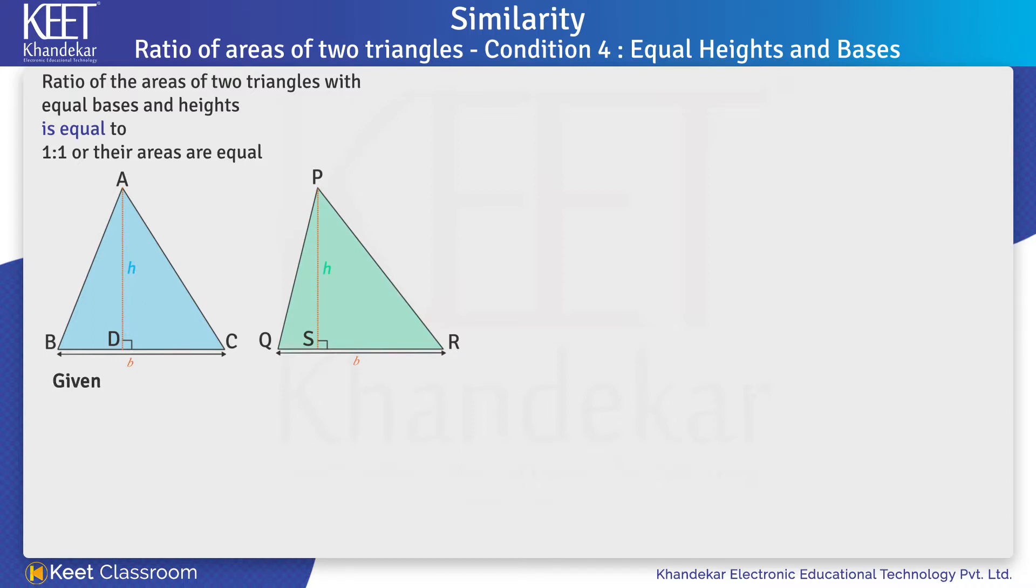Therefore, in the given, we write: In triangle ABC, on base BC, the corresponding height is AD. And in triangle PQR, on base QR, the corresponding height is PS.